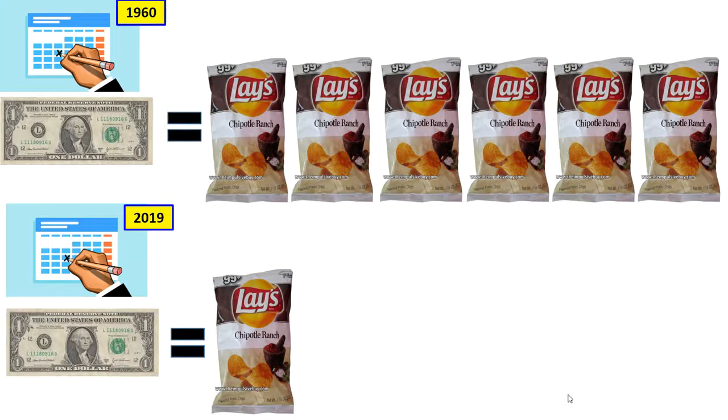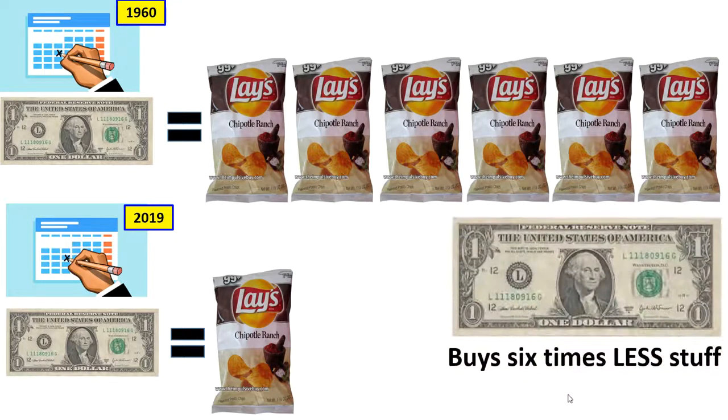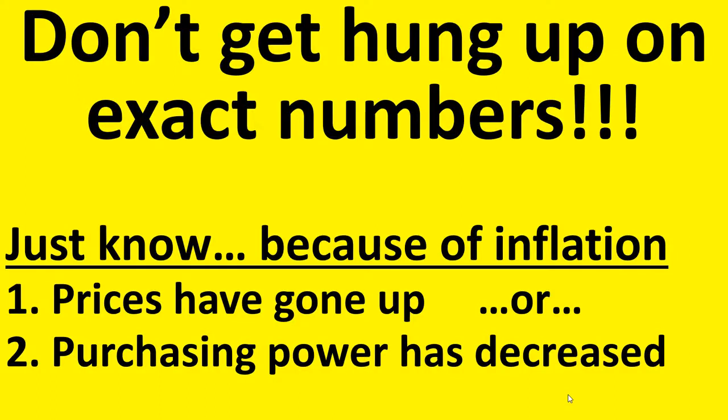From 1962 to today, a dollar has less purchasing power because they've printed too much money — it buys six times less stuff. Just know that because of inflation, prices have gone up, or equivalently, the purchasing power of the dollar has decreased. Both of those are the same thing.